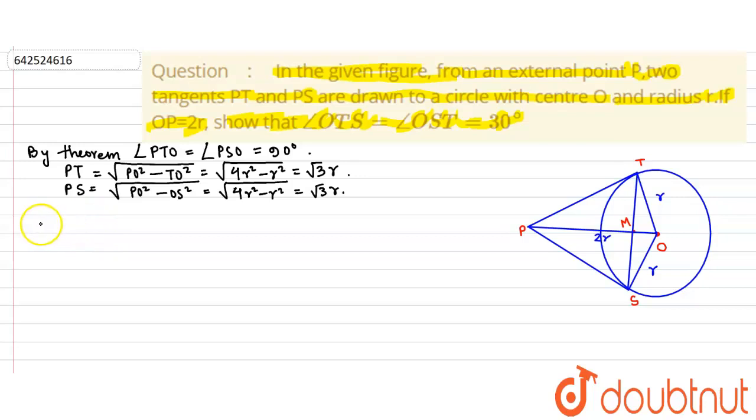Now since both triangle PTO and triangle PSO are right angled, we can evaluate tangents because these are right angled triangles.